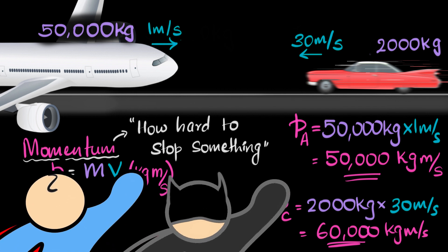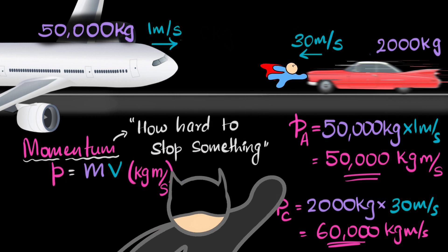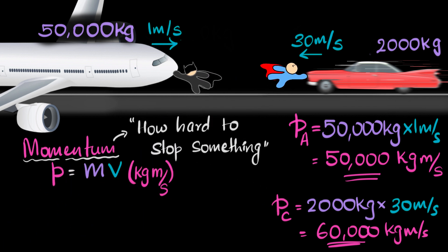And so now we know what to do. Since the car is the one that's harder to stop, we can assign that to Superman, Batman gets the airplane, and our day gets saved.